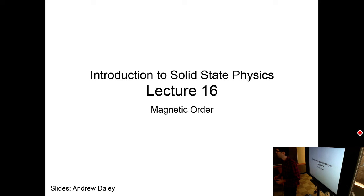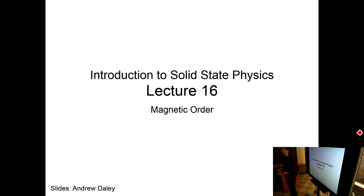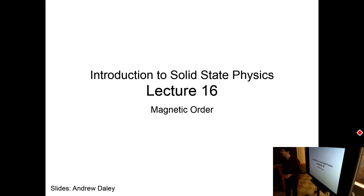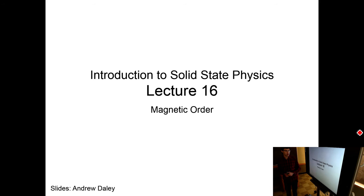Today's lecture continues the topic of magnetism. Last time we covered magnetism from non-ordered systems of spins — two spin subsystems in a solid, spin up and spin down, and how applying a magnetic field can generate magnetization either in the direction of the field or opposite, giving paramagnetism and diamagnetism. Today is about magnetic order.